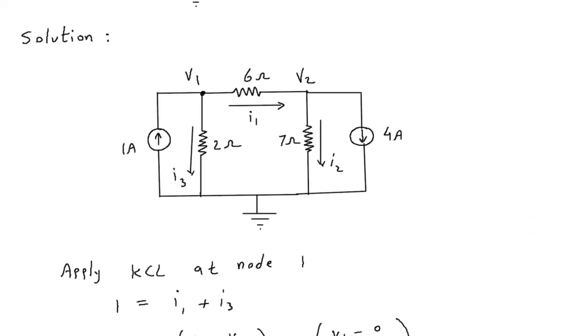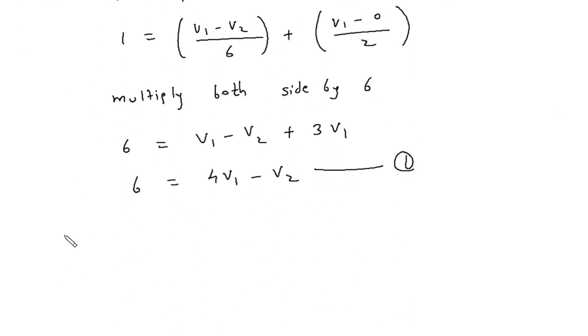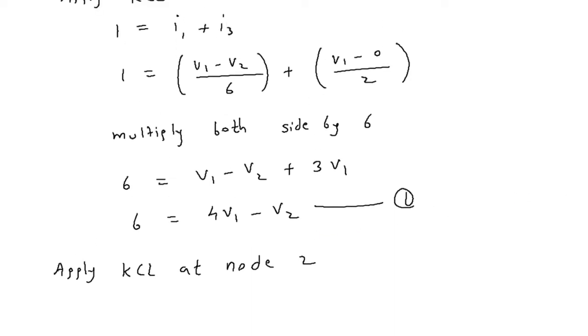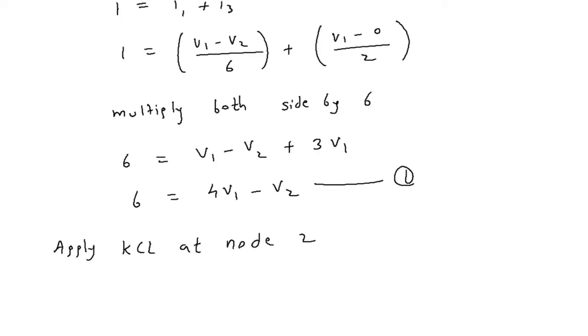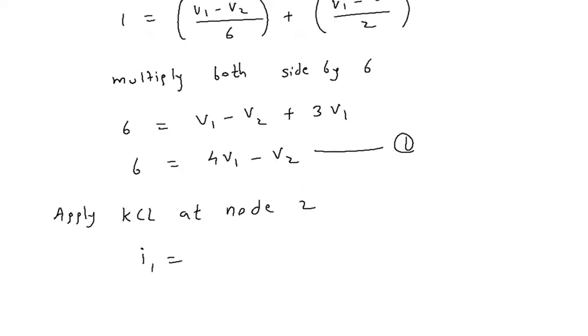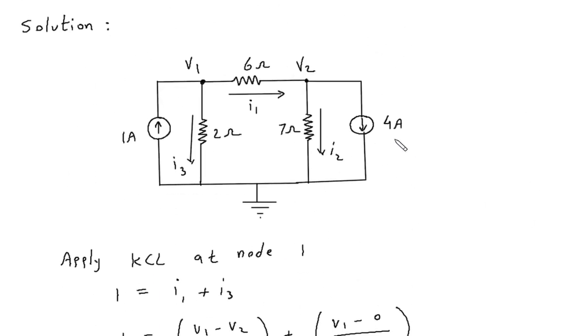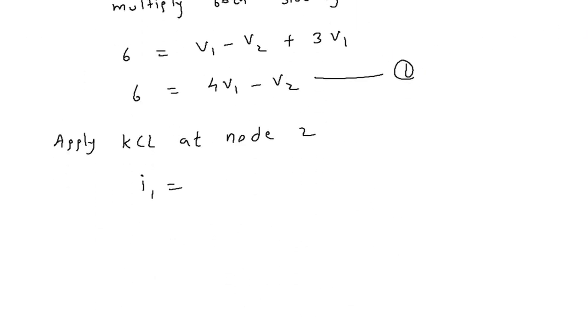Now we will apply KCL at node V2. If we apply KCL at node 2 then incoming current is I1. I1 equals I2 plus 4, or we can write minus 4 equals I2 minus I1.